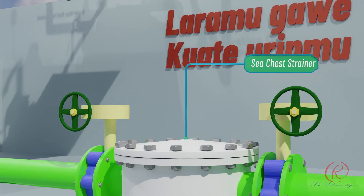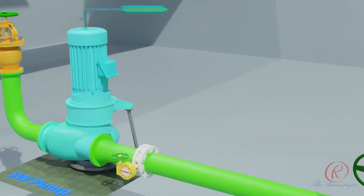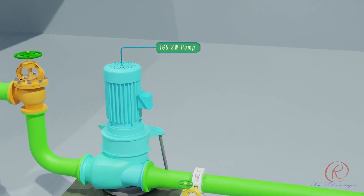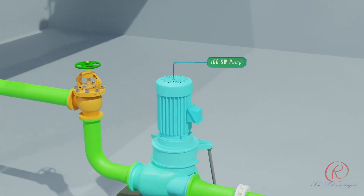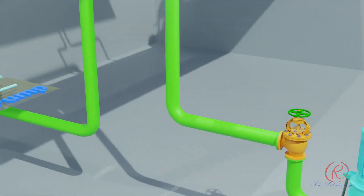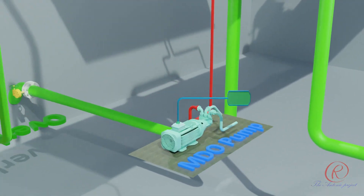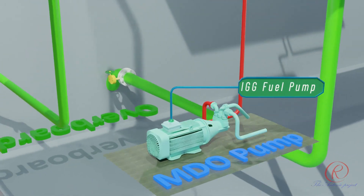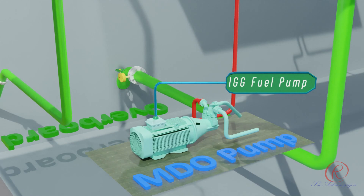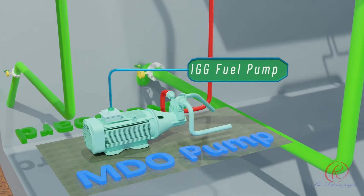Sea chest strainer: to filter debris and marine organisms from sea water before it enters the ship's sea water systems. IGG sea water pump: to supply sea water to the scrubber for cooling and flue gas washing by spraying. IGG fuel pump: to transport fuel oil from a storage tank to the burner.